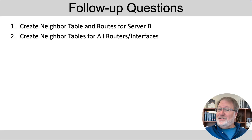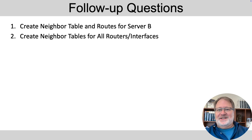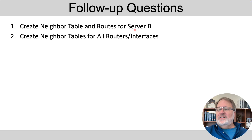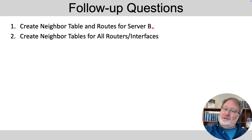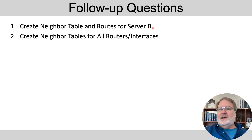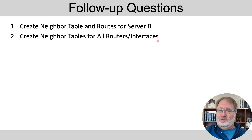If you enjoyed that and want a little more, here are a few more questions — though I'm not going to give an explanation. Think about and create all the neighbor table entries needed for server B on that bottom LAN, both on the router and on server B, and then think about neighbor table entries needed for those routers on the WAN links in the center of the figure.